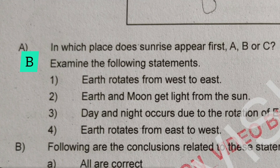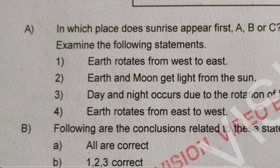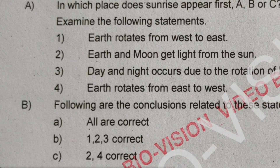This B question is also asked. The Earth gets light from the sun. Day and night occur due to the rotation of the Earth — that is also correct.